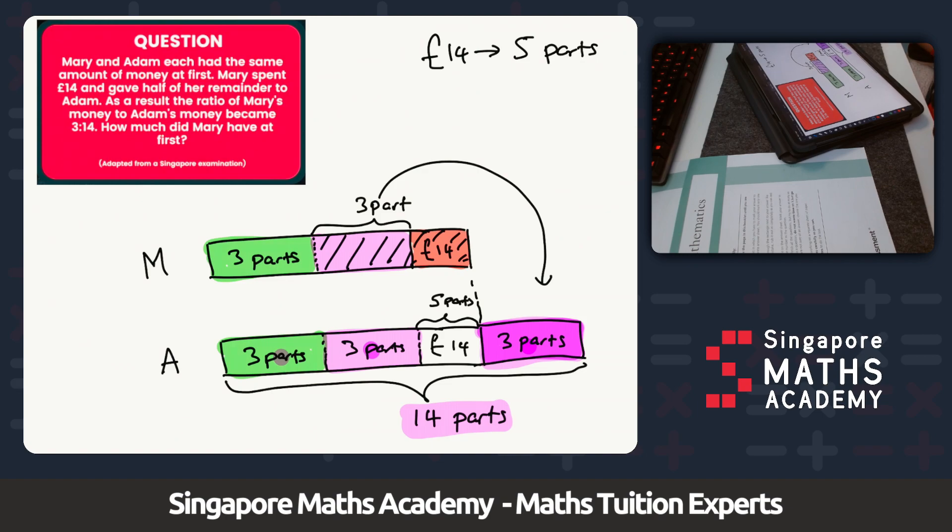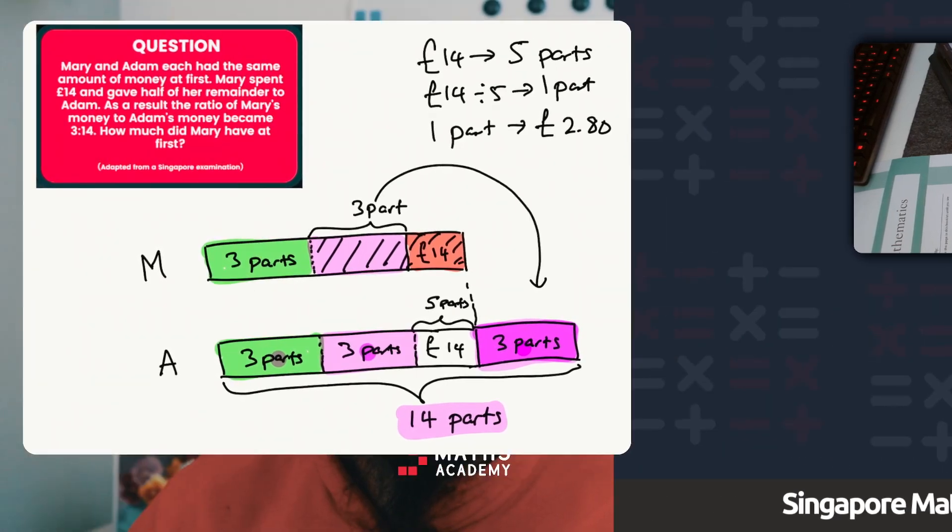That therefore means that each part must be £14 divided by 5, which would give me one part. And one part therefore is going to be £2.80. So we've got £2.80, that represents one part.